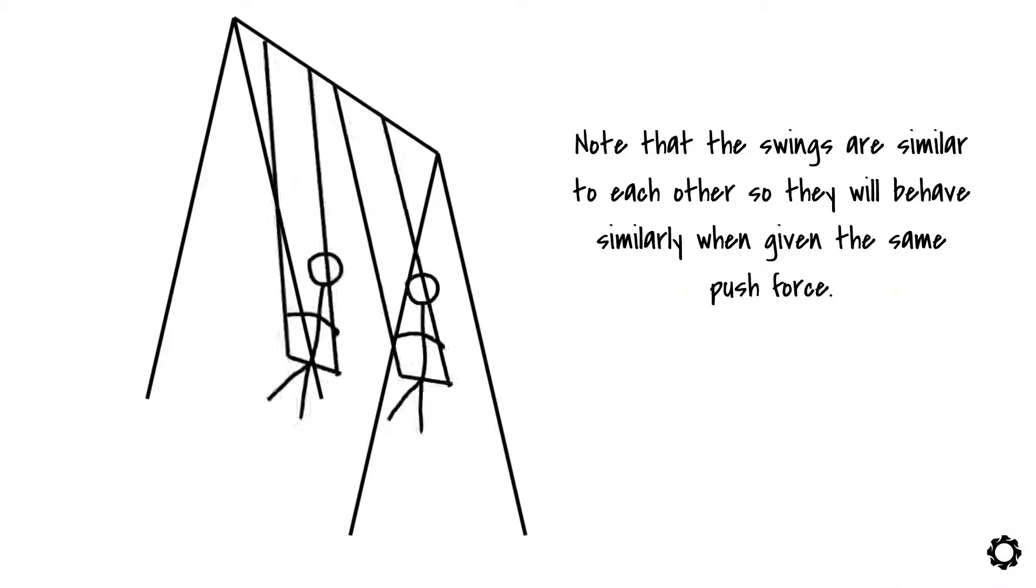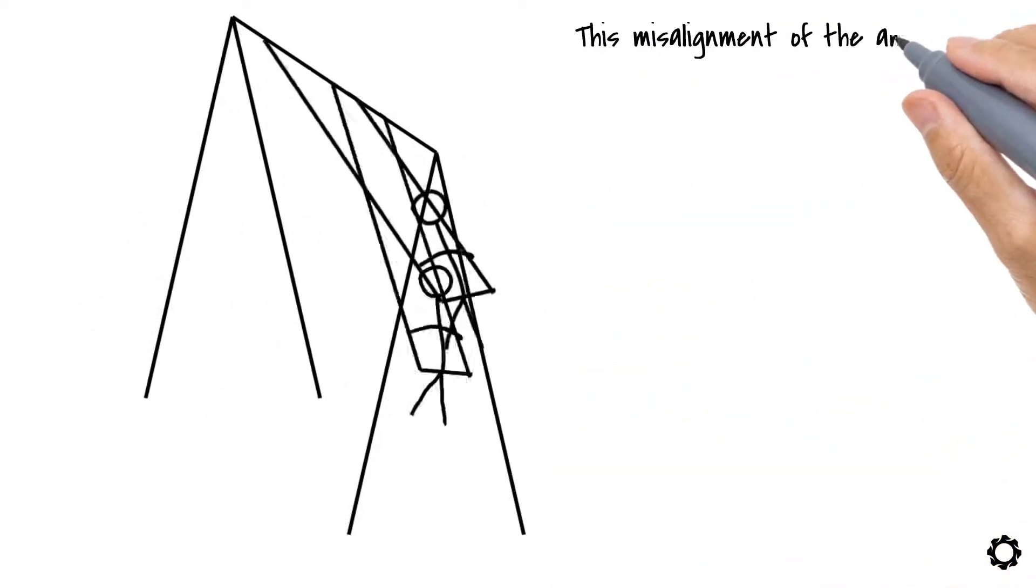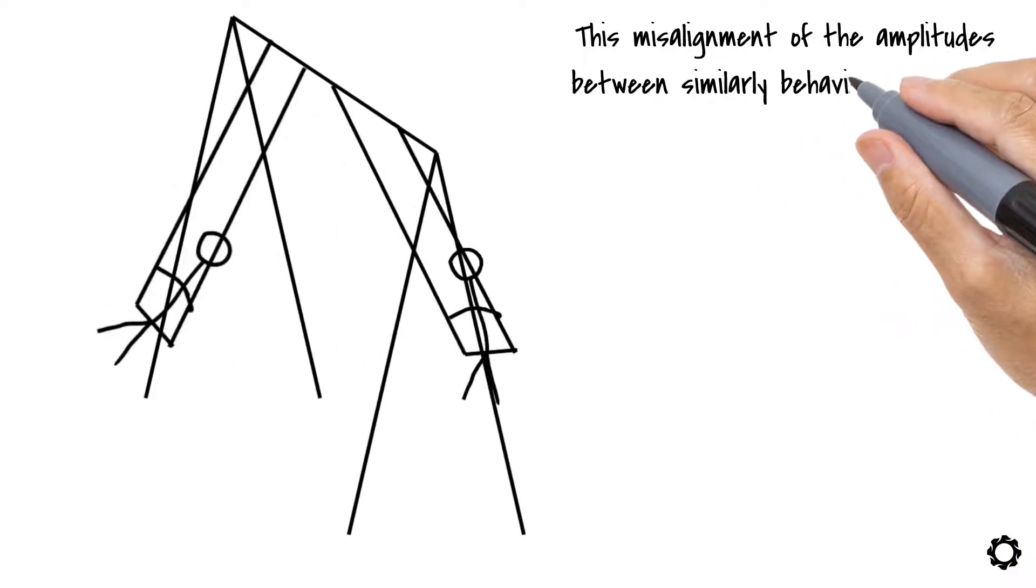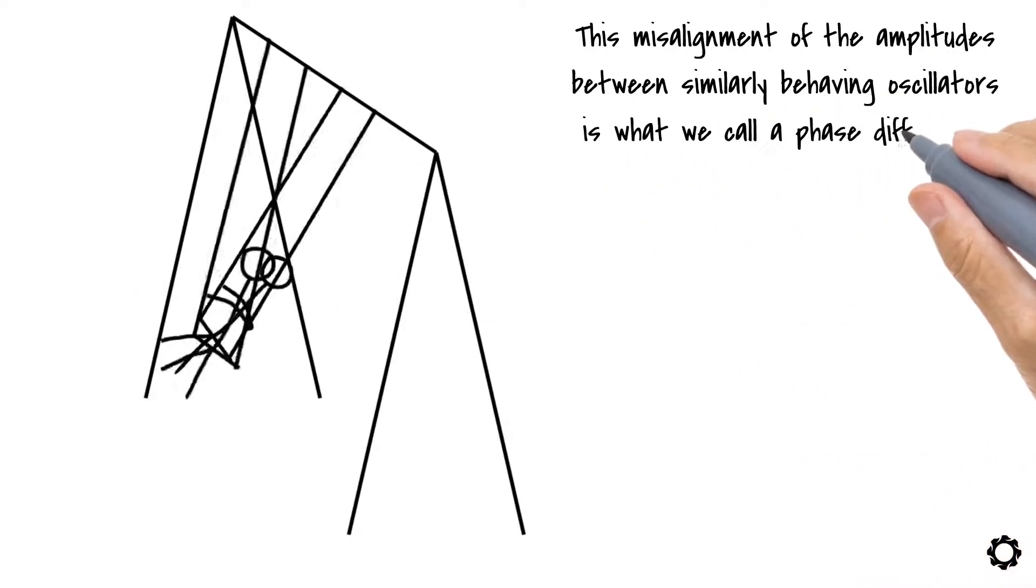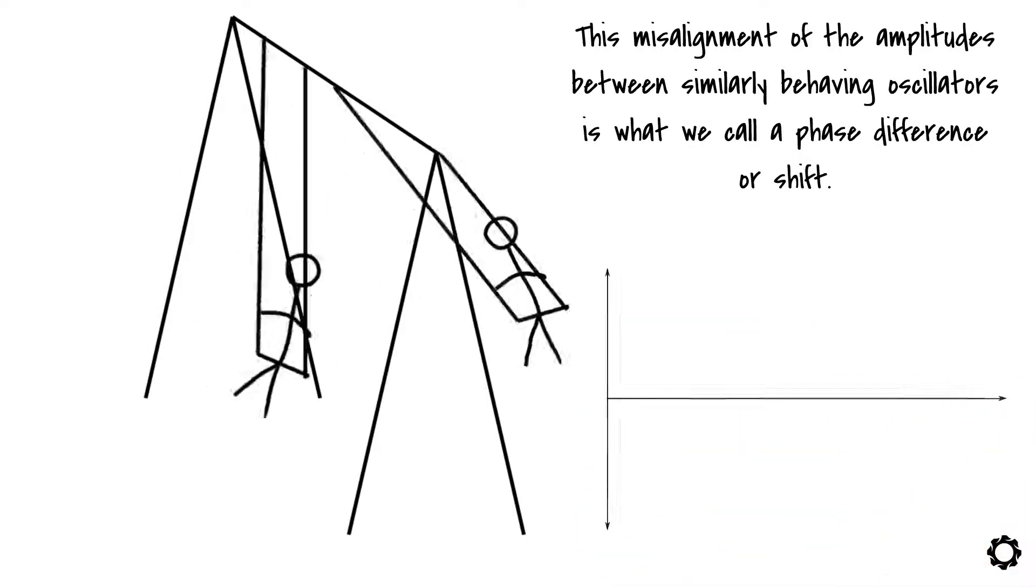On the other hand, if this provided push force is delayed for the other swing, then the amplitudes of the two swings motion will not be aligned anymore. This misalignment of the amplitudes between similarly behaving oscillators is what we call a phase difference, or more specifically, a phase shift denoted by the symbol phi.